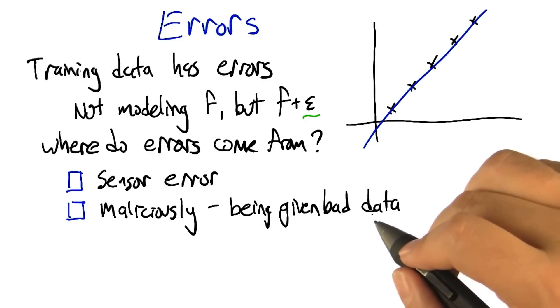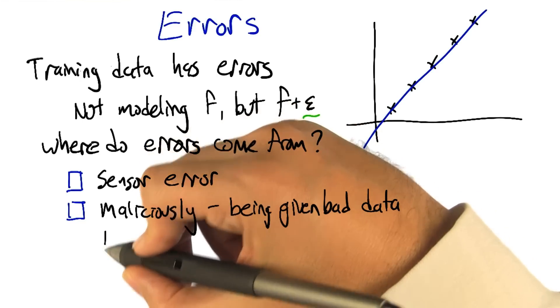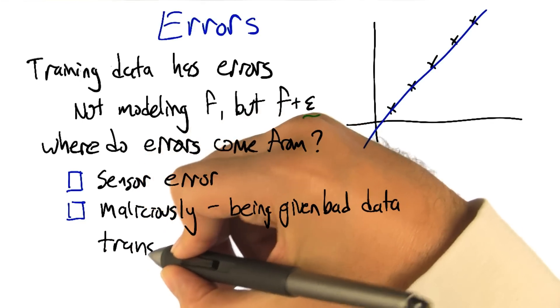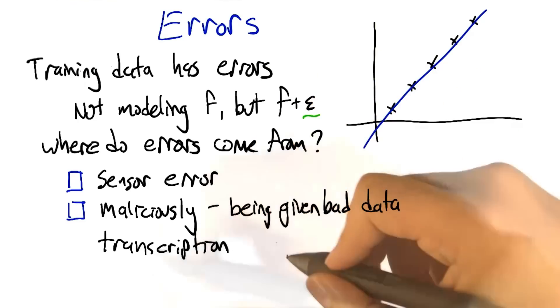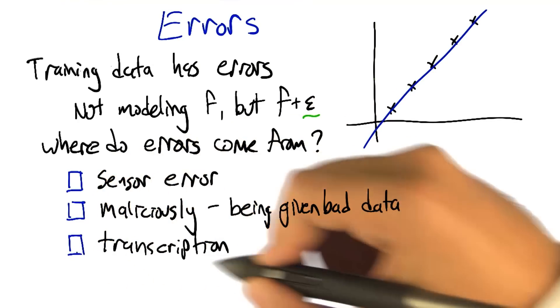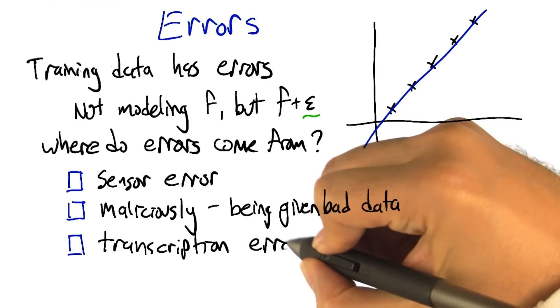Well, another time that you can get data is if somebody's copying stuff down. So what about sort of the idea of a transcription error? We've copied everything, but there's just some of the lines that got filled in just got mistyped. Yeah, and you think that's different from sensor error?